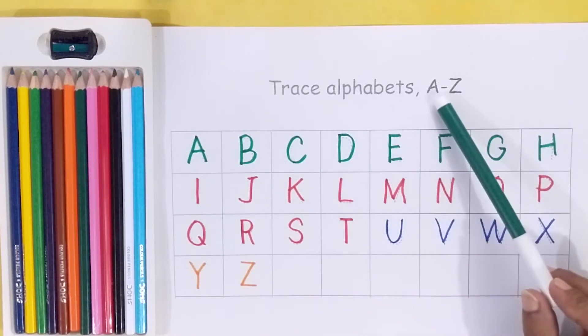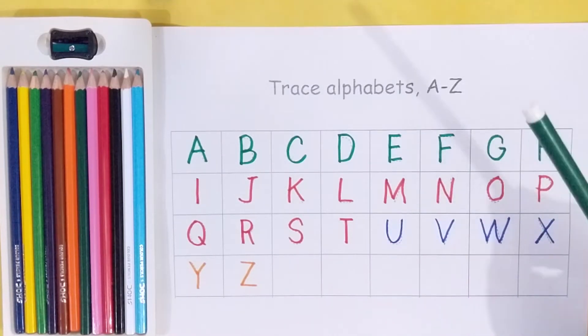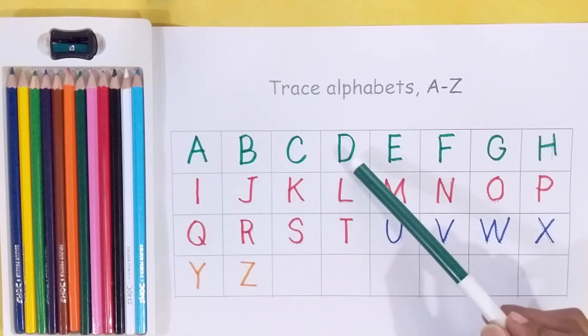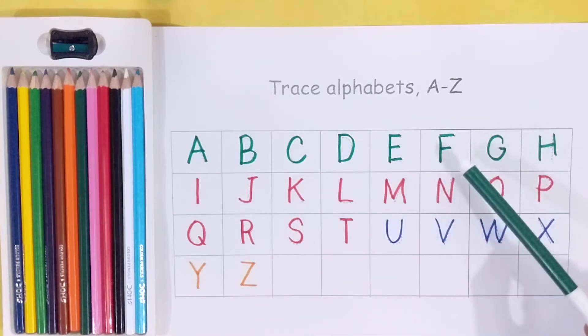Trace alphabets A-Z. Green color: A, B, C, D, E, F, G, H.